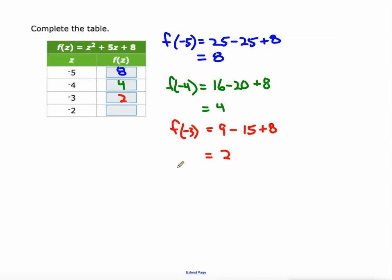And one more. F at negative 2. Negative 2 squared is 4. 5 times negative 2 is negative 10, plus the 8. 4 and the 8 makes 12, minus the 10 makes 2.